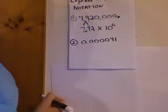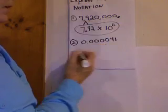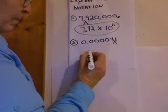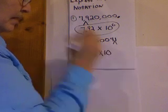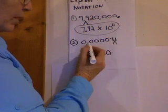Alright, if I want to write this number in scientific notation, this number here, where should the decimal point go? Right there. 4.1 times 10. Now, count from the decimal point to where I want it.